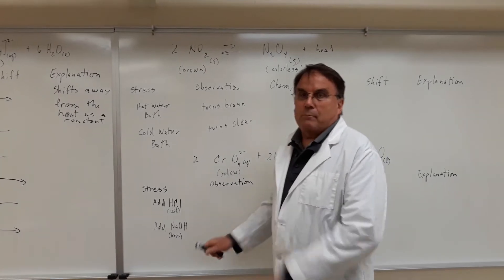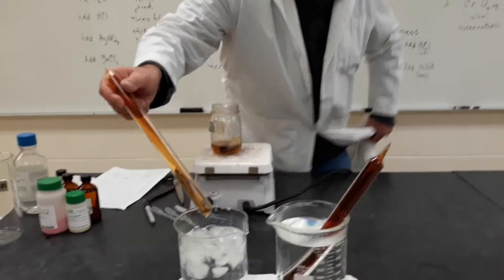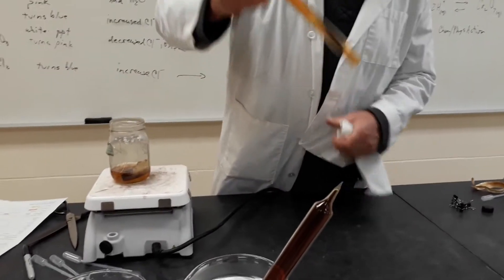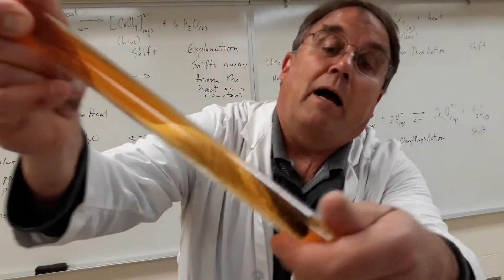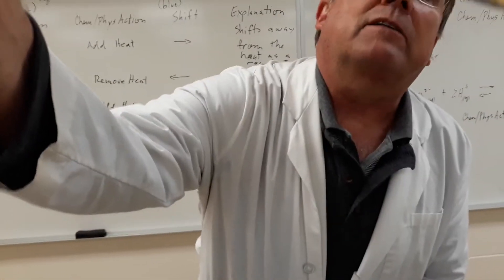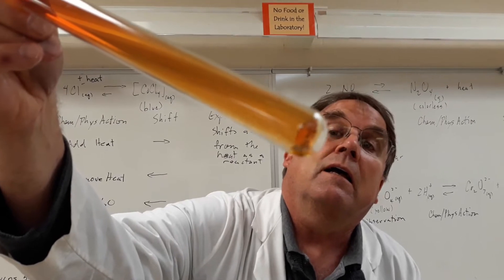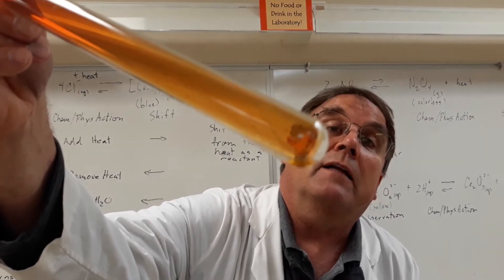And then another thing happens that's kind of cool. If we zoom in on this, we can see what looks like moisture on the outside. If I dry it off, it's actually moisture on the inside. Guess what that moisture is? It's liquid nitrogen dioxide.